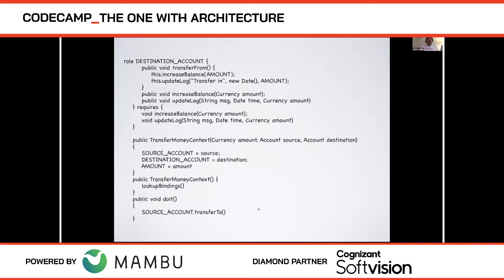Transfer-from doesn't have an argument because all these roles live together in the same context — the context for the use case called money transfer. There's a universe of discussion: the source account, destination account, and amount all know about each other. Transfer-from says: on myself, increase balance by amount. Amount is another role sitting in the context. These are like actors in a play carrying out a script — this is the script for the actor destination account.